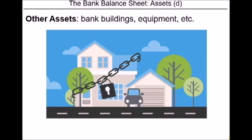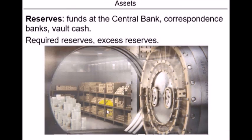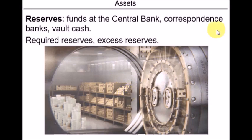Lastly, banks can have other assets on their balance sheet such as office buildings, equipment, or houses repossessed when a mortgage was not repaid. As a fun fact, gold that some banks hold was going to be reclassified as another type of reserves sometime in 2019, according to the upcoming Basel 3 accord.